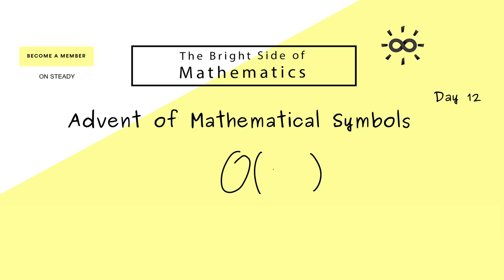So there is a function name, for example g, and you also often find the variable name, for example x. Now it's important to note that this Big O only makes sense with respect to a limit. For example, you can write at the end that the variable x goes to the number a. Also, it's allowed that this a is the symbol infinity or the symbol minus infinity.